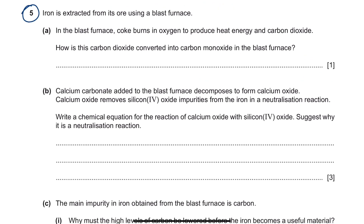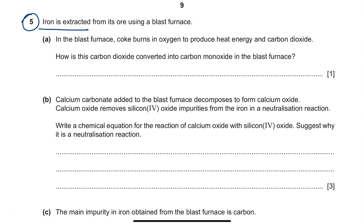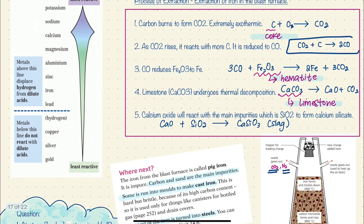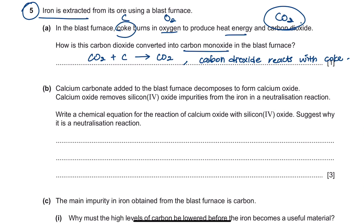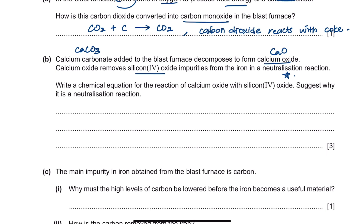This is the question from February/March 2017, a combination of iron and zinc extraction. For the first part, in the blast furnace coke burns in oxygen to produce heat energy and carbon dioxide. How is carbon dioxide then converted into carbon monoxide? Carbon dioxide reacts with coke. Part B: calcium carbonate decomposes to calcium oxide, which then removes silicon oxide in a neutralization reaction. Write a chemical equation for the reaction of calcium oxide with silicon oxide.